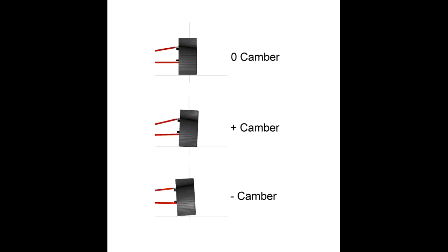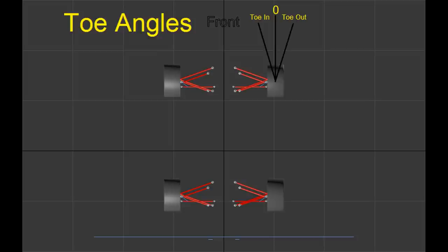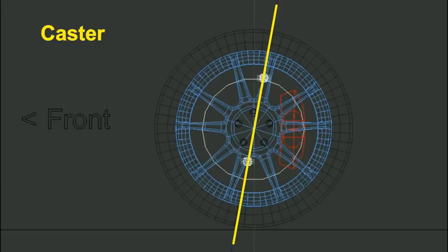A quick recap of basic suspension angles so everything else in the video makes sense. Camber is the tilt on your tire when looking at it from the front view. If the top of the tire is tilted away from the center of the car, that's positive camber; if it's tilted towards the car, that's negative camber. Toe is when you're looking at the tires from the top view — if the tires are pointing towards the centerline of the car, that's toe in; if they're pointing the other way, that's toe out.